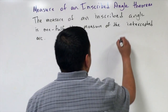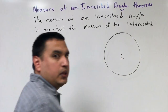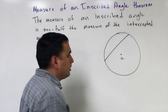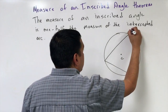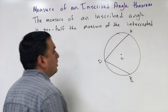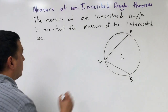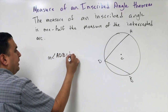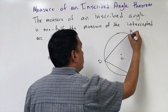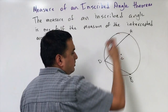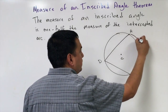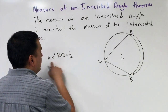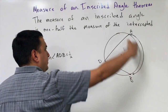So if I have a circle — we'll call this circle C — and I have an inscribed angle, that means the vertex is on the edge of the circle. We call the points A, D, and B. The inscribed angle is angle ADB. It's going to be one half the measure of the intercepted arc. The arc is the one between the endpoints A and B. So the measure of angle ADB is half of arc AB.